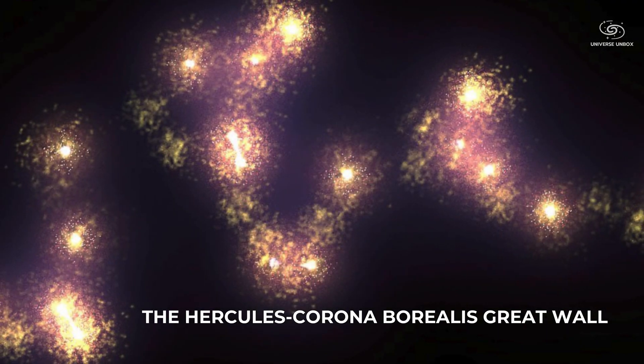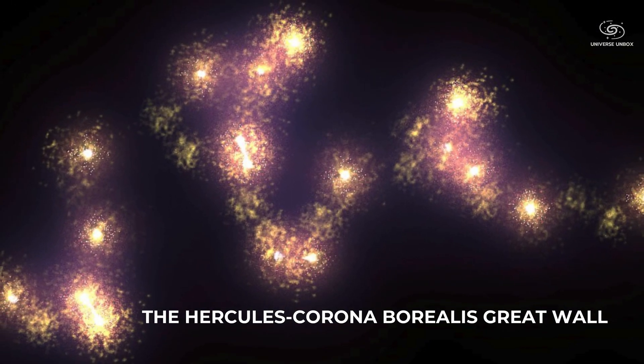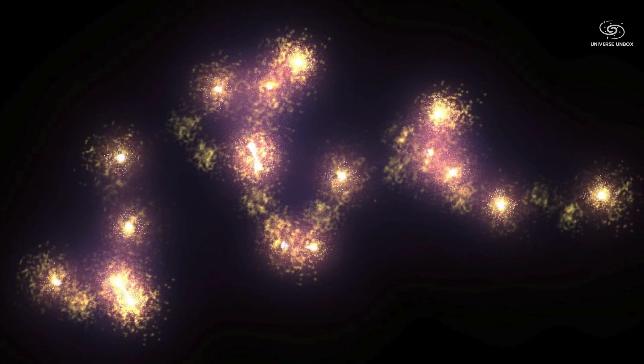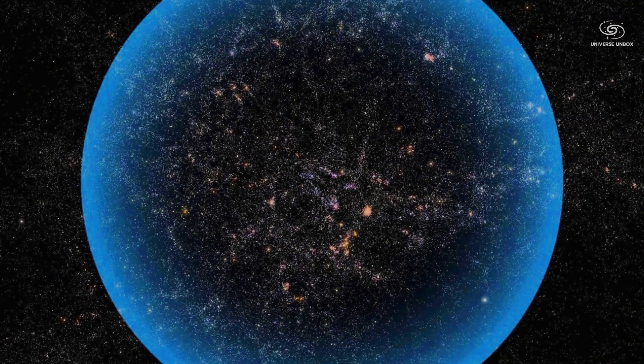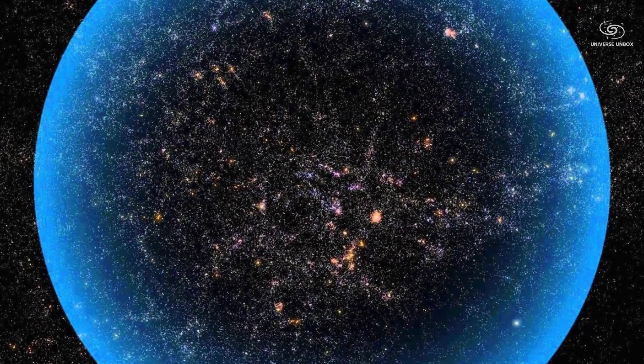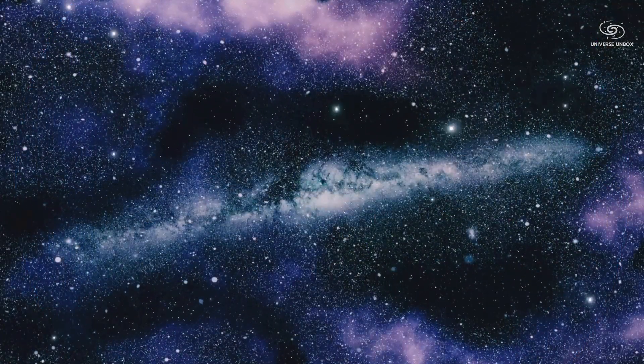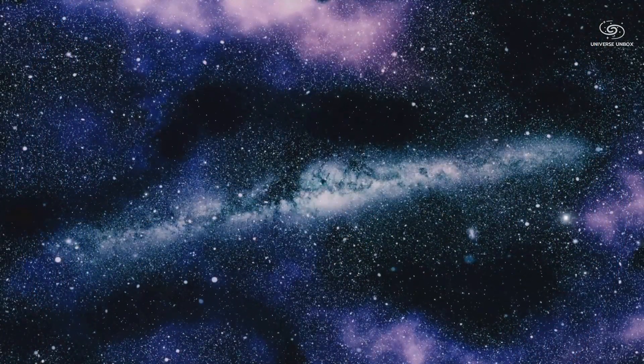Zooming out, we find the Laniakea supercluster in the Hercules-Corona-Borealis Great Wall. Thousands of galaxies on the map look like tiny dots. At maximum zoom, this is our entire observable universe. We think it is infinite, but there is evidence suggesting it has boundaries.